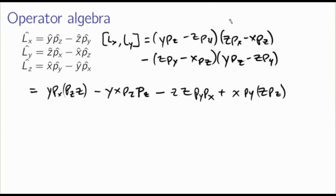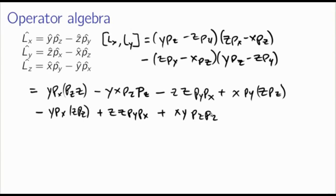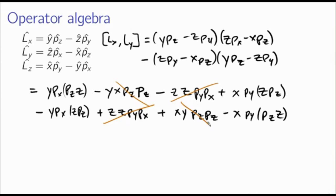Now several terms cancel. The z·z·py·px terms cancel against each other, and the x·y·pz·pz terms cancel because x and y commute, so those pairs are equal. What remains are terms containing y·px with (pz·z − z·pz) and terms containing x·py with (z·pz − pz·z). These are exactly commutators: y·px·[pz, z] and x·py·[z, pz]. The commutator [z, pz] = iħ, and swapping the order gives −iħ.